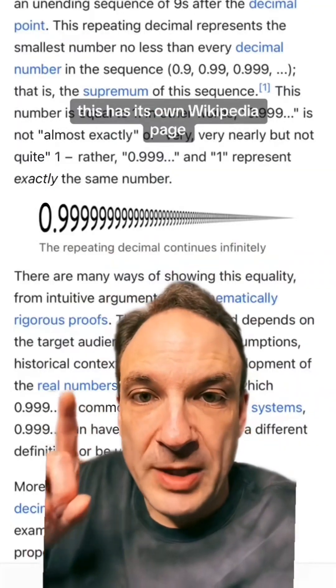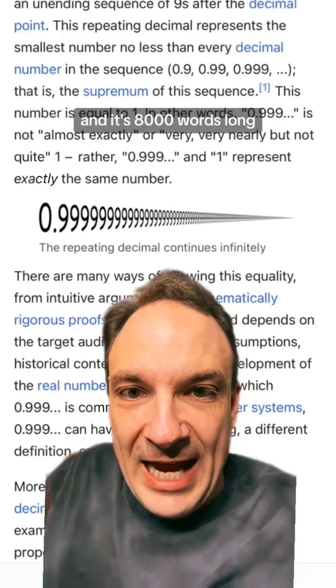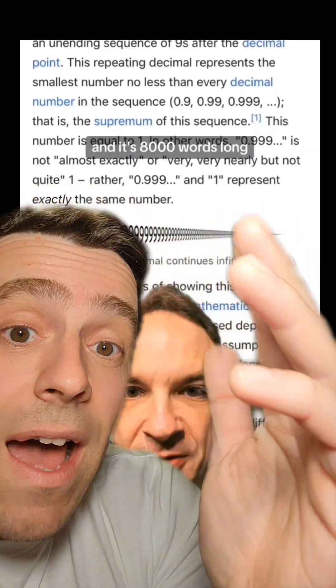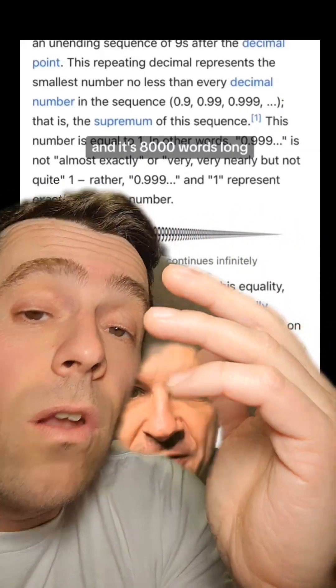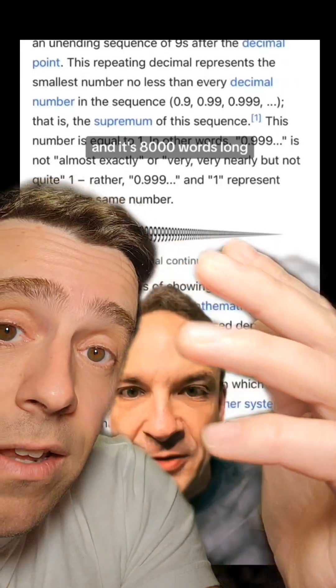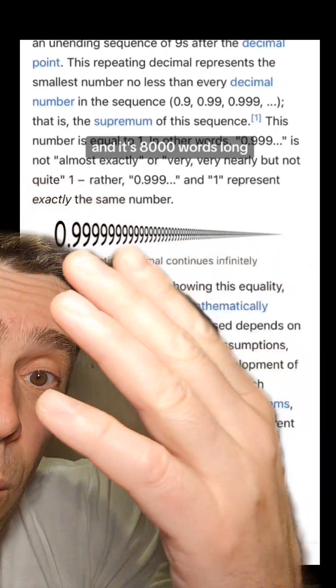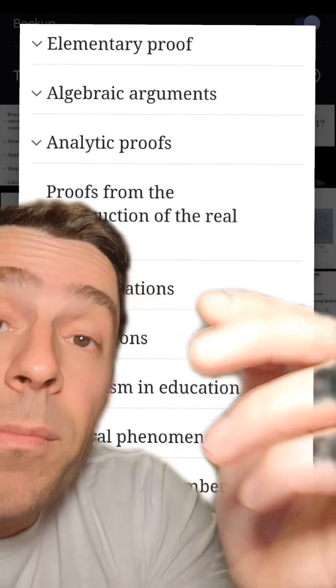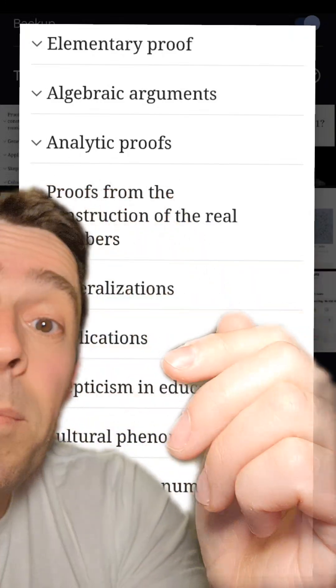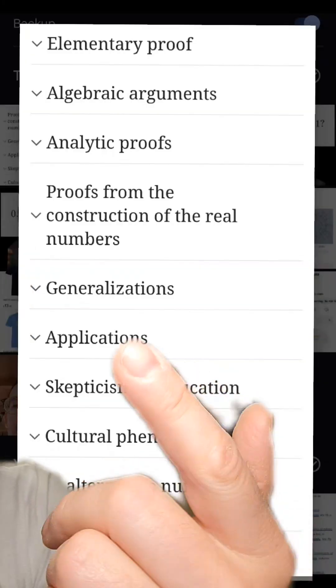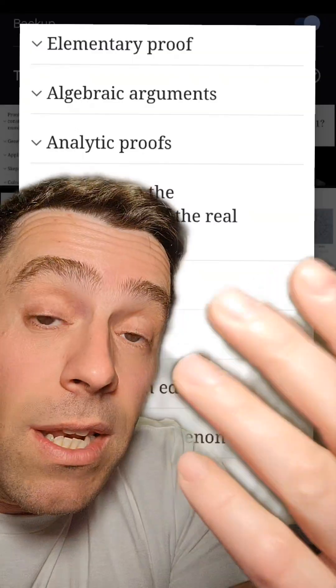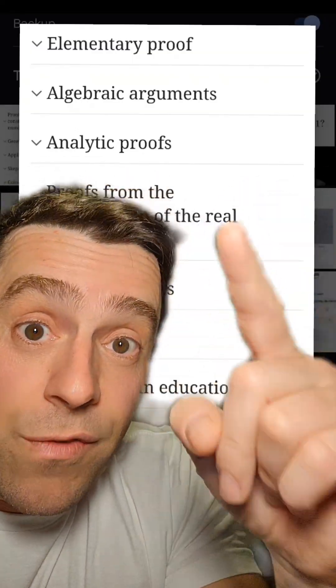This has its own Wikipedia page and it's 8,000 words long. The Wikipedia page is 8,000 words long because it contains a lot of information trying to educate the public about why that number is exactly 1. The Wikipedia page has elementary proofs, algebraic proofs, analytic proofs, other proofs, generalizations, applications, skepticism in education—so that section is for you.